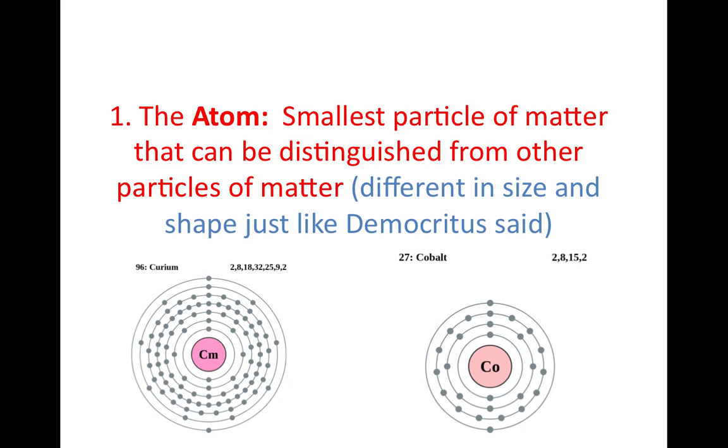What that means is that atoms are different in size and shape, just like Democritus said. If you look at the two images I have, one is of curium, one is of cobalt. You can see that they're different in terms of their subatomic makeup. They have a different number of electrons, a different number of protons, and a different number of neutrons. But if I look at an electron from cobalt or curium, they're exactly the same.